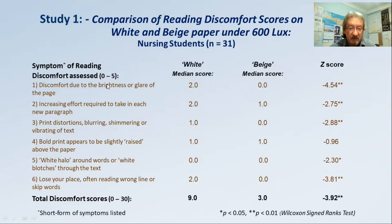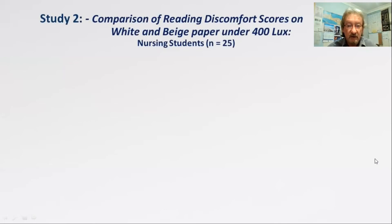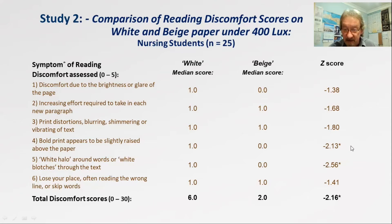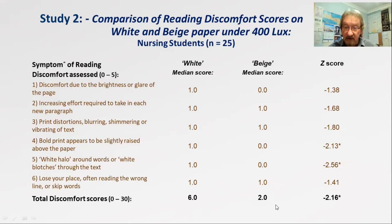The symptoms were rated from zero to five, so the total discomfort score was between zero and 30. As for study two — the second component of our study — the group was slightly smaller. The scores were lower under the lower illumination, which shows an effect. However, two of the symptoms reduced even further under the lower illumination when the students turned to the beige-coloured paper. The total discomfort score under the 600 lux condition was nine; here it was six, but when comparing to the beige-coloured paper it was two, and this difference was also significant.